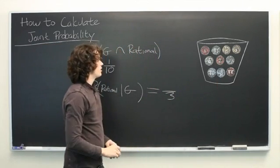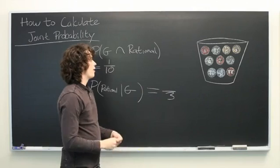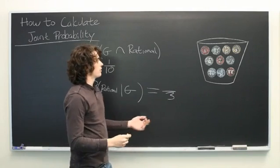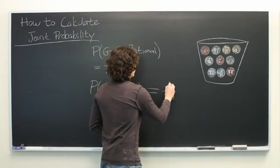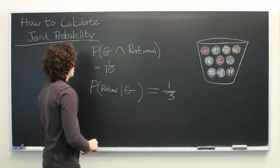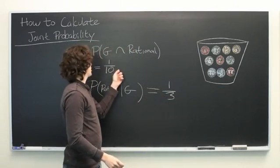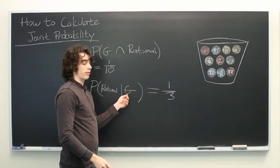From that subset, we simply need to calculate the number of rational balls, which in this case is 1. Notice how this is much more likely than this if we already know that one of the balls we've drawn is green.